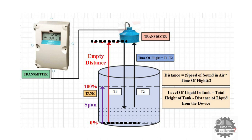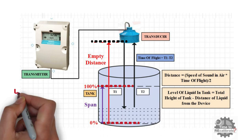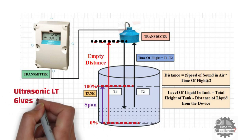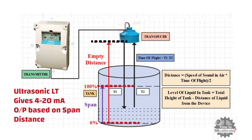Second important term is span. Span is the distance from 0% level of the tank to 100% level of the tank. Any ultrasonic level transmitter gives 4 to 20 mA output based on span distance. You have to have correct span value for accurate level measurement in ultrasonic level transmitter.